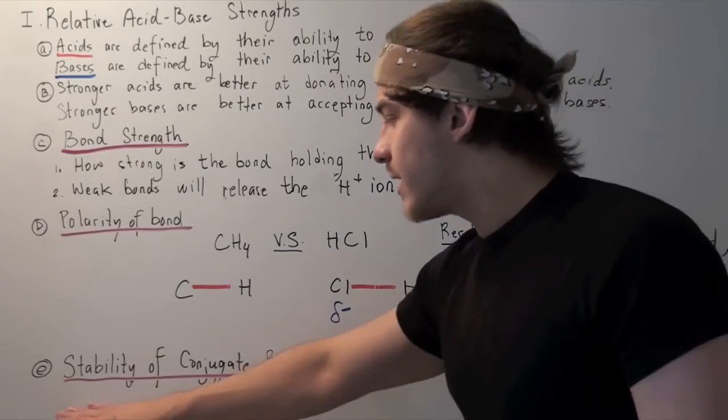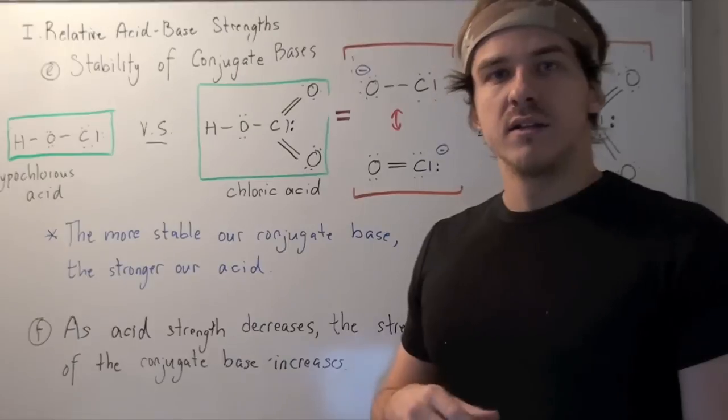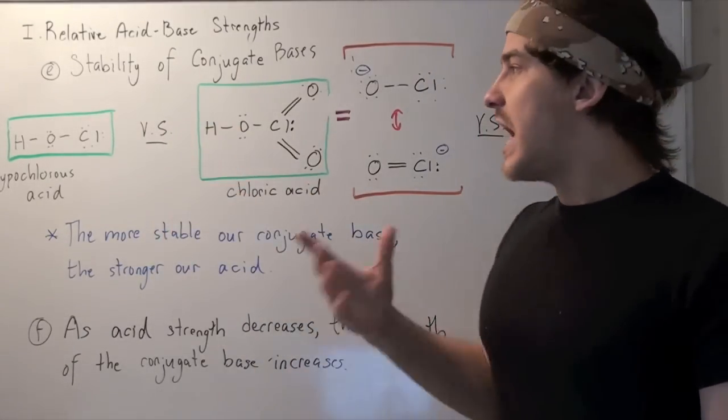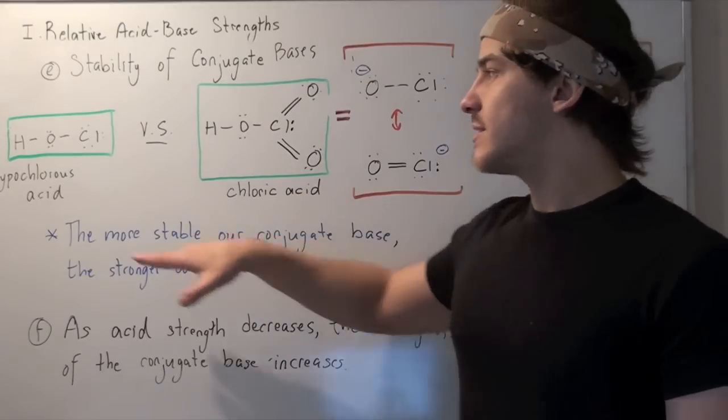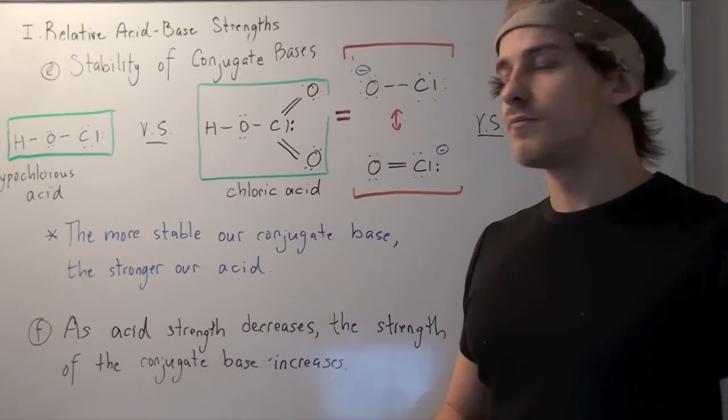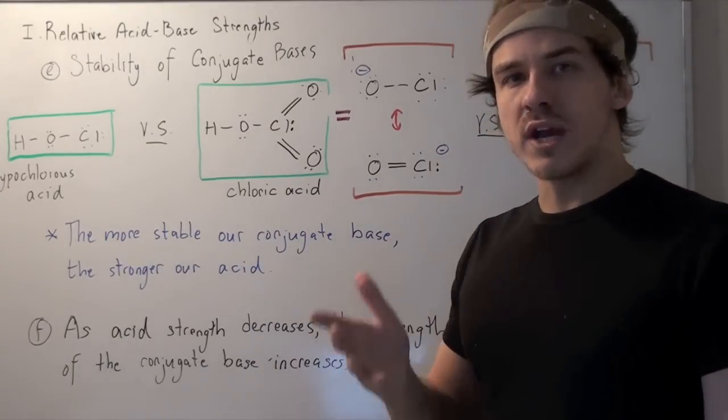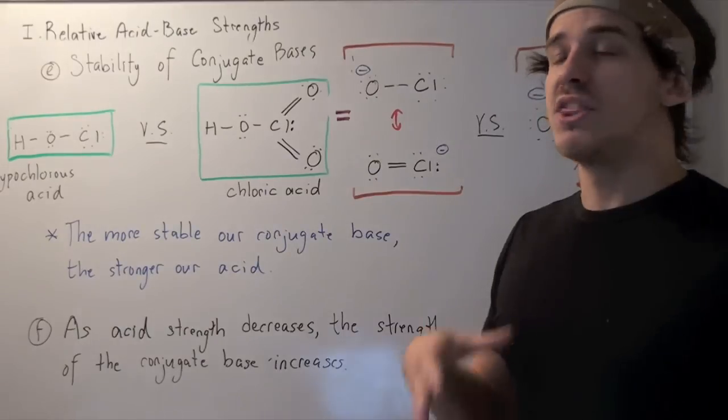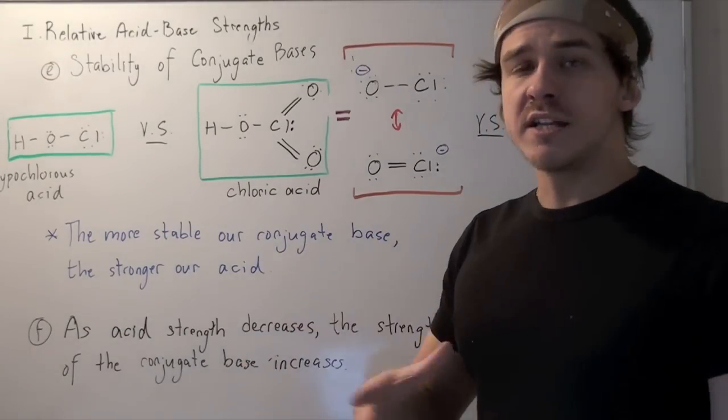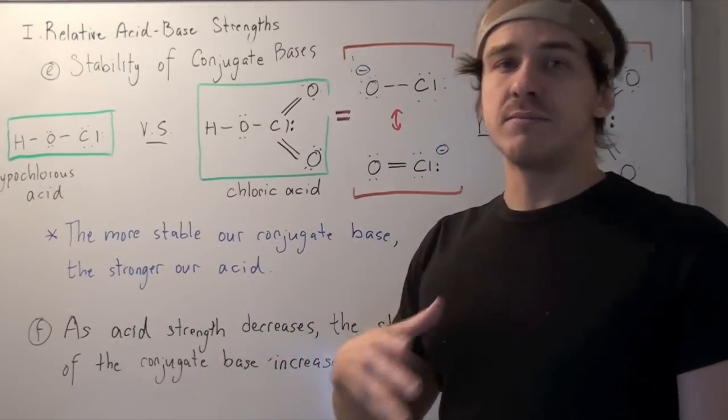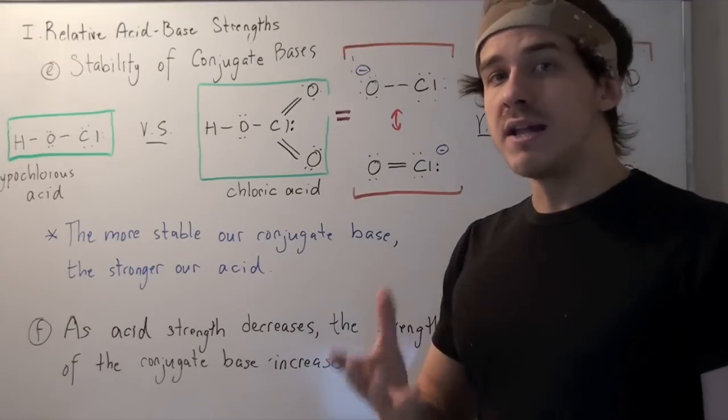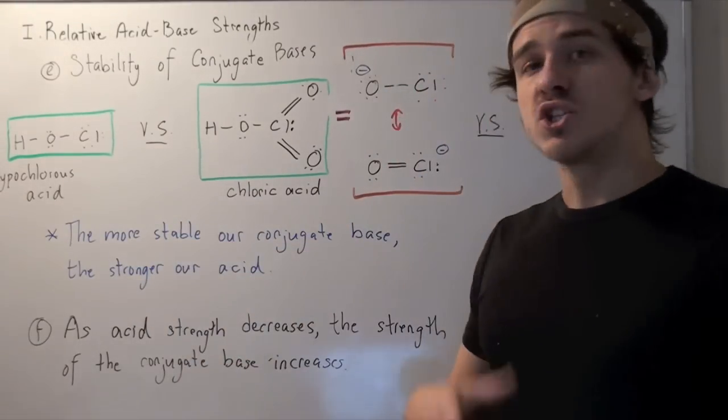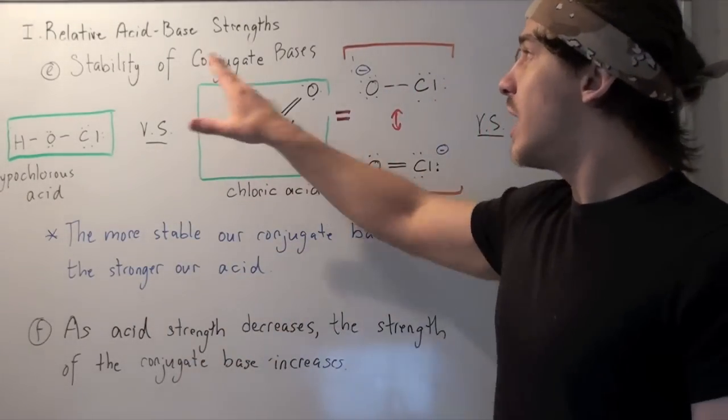Finally, let's look at the stability of conjugate bases. If you forgot what a conjugate acid and base is, check out the link below. We're going to explore the difference between chloric acid and hypochlorous acid. If we look at the polarity and the bond strength, we see that this HO bond and this HO bond are identical. And that means, according to polarity and bond strength, these acids should have the same strength. But experimentally, we know that chloric acid is a better acid than hypochlorous acid. Let's examine why.